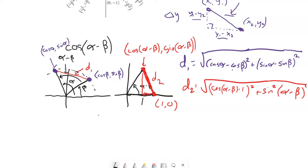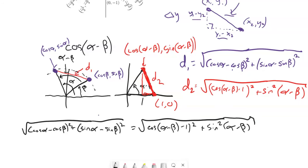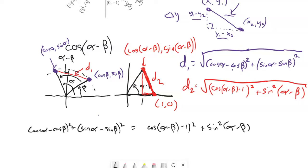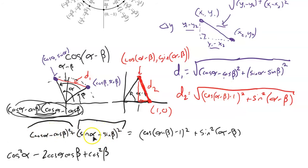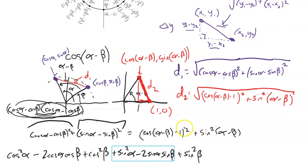Since these distances are equal, if I square both sides the square roots disappear. Squaring the left side — cosine alpha minus cosine beta, times itself — I distribute everything to everything and end up with cosine squared alpha minus 2 cosine alpha cosine beta plus cosine squared beta. And then squaring the right side gives a similar expansion.